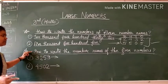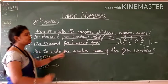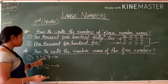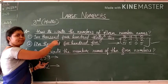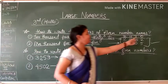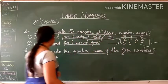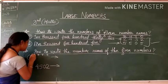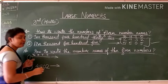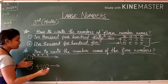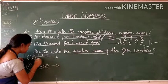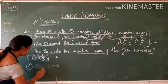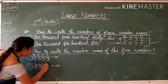Now I am telling you the second thing: how to write the number names of the given numbers. The numbers are already given and you have to write the number names. For this also, same thing — you have to write ones, tens, hundreds, and thousands as the place headings. For example, we are taking the number 2, 3, 5, 9 and here also writing 4, 0, 2.